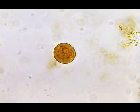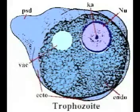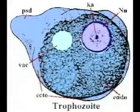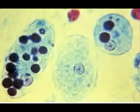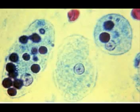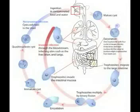Trophozoites that are passed in the stool are rapidly destroyed once outside the body, and even if ingested would not survive exposure to the gastric environment. Transmission can also occur through exposure to fecal matter during anal sexual contact, in which case not only cysts but also trophozoites could become infectious.